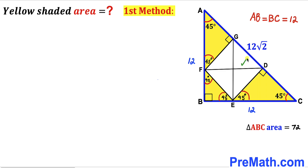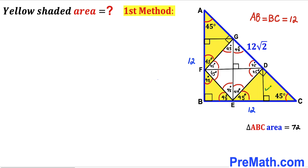Drawing the diagonals of the white square creates four 45° angles at the center. I also drop perpendiculars in both yellow right triangles, creating additional 45° angles. Now, observing the white square, the four triangles formed inside are congruent. Additionally, the triangle in the top yellow region is congruent to its corresponding half, and the triangles in the side yellow regions are congruent as well. So we end up with nine congruent triangles in total.